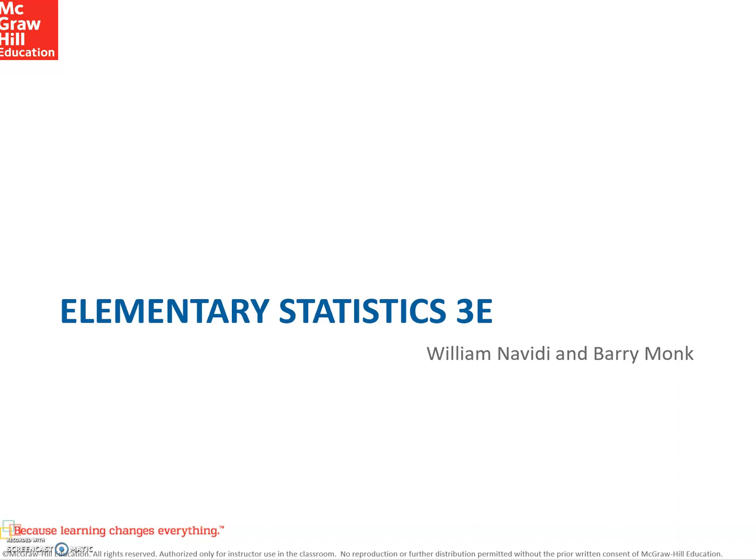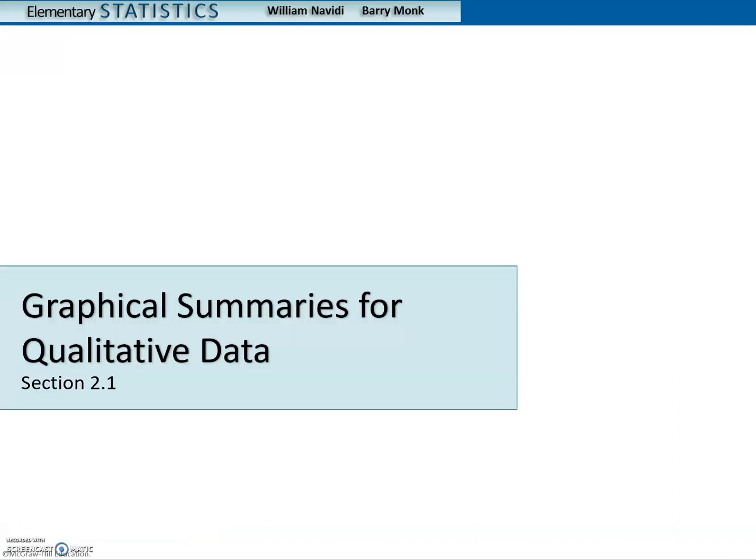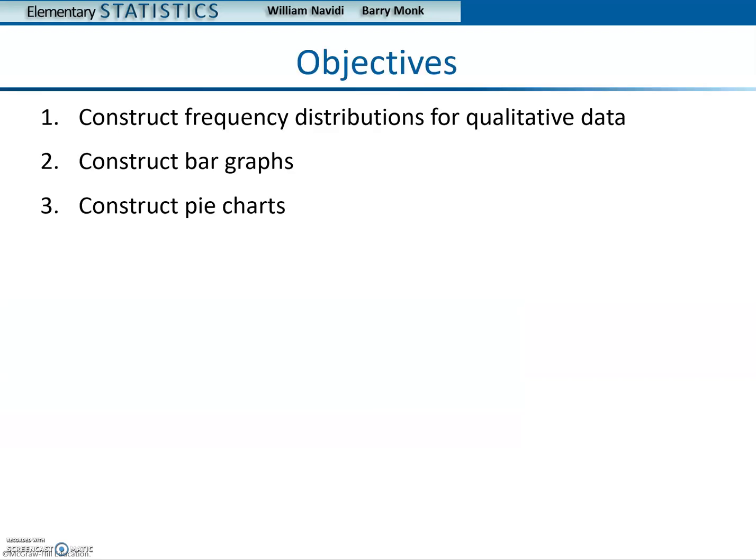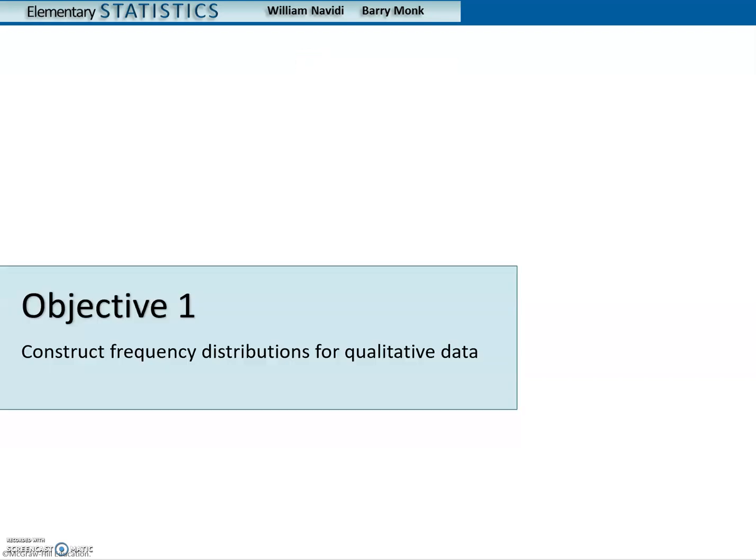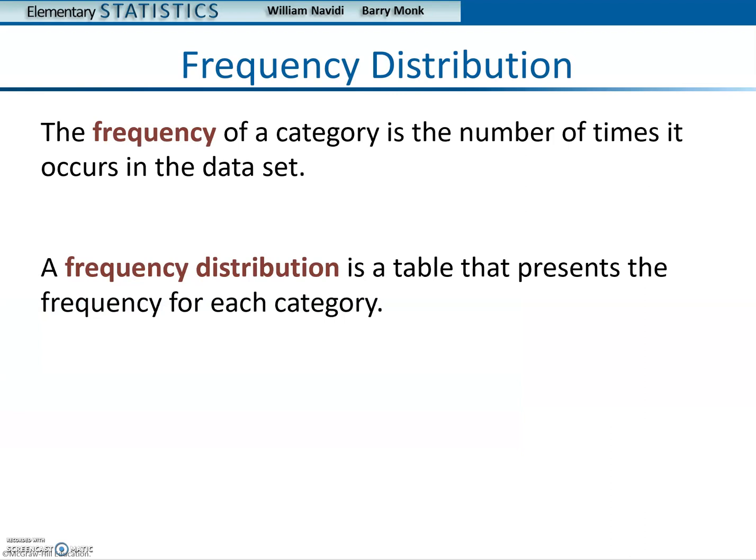Section 2.1 Graphical Summaries for Qualitative Data. Frequency Distributions. The frequency of a category is the number of times it occurs in the dataset. A frequency distribution is a table that presents the frequency for each category.